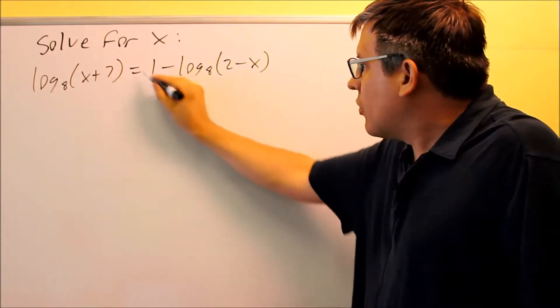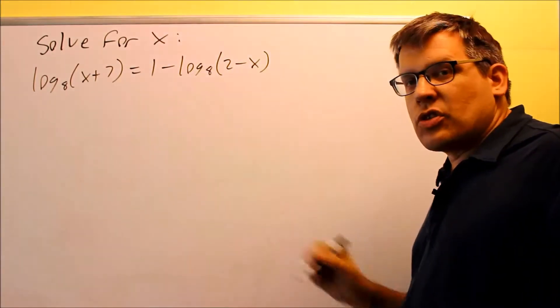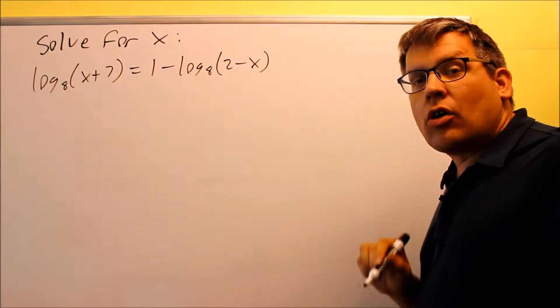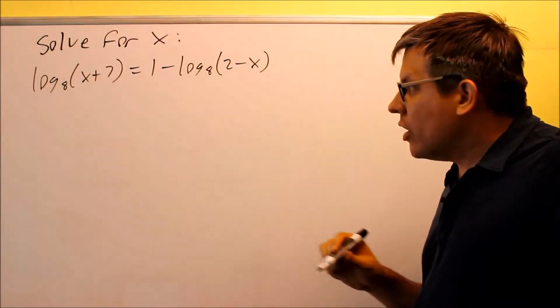In this case, we've got an extra thing. The 1 here prevents us from just canceling out the logs. So instead, the way we're going to solve this is we're going to get all the logs onto one side of the equation.